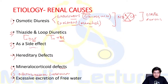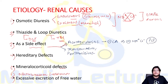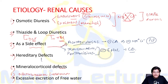Certain drugs can as a side effect lead to hypovolemia. Drugs like acetazolamide, which are carbonic anhydrase inhibitors, inhibit absorption of sodium and chloride in the proximal convoluted tubule. On the other hand, drugs like trimethoprim and pentamidine inhibit the epithelial sodium channel present in the collecting duct, thereby inhibiting sodium chloride and water reabsorption.